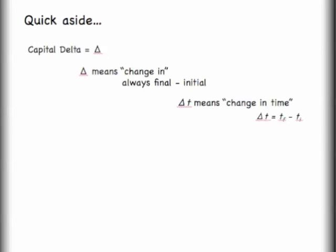As a quick aside, let's look at this little letter here. This is the capital letter delta from the Greek alphabet. It's a triangle. We use it a lot. It means change in and it always means the final minus the initial. So for example, if I said delta t, that means the change in time, which could be written as delta t equals t final minus t initial.